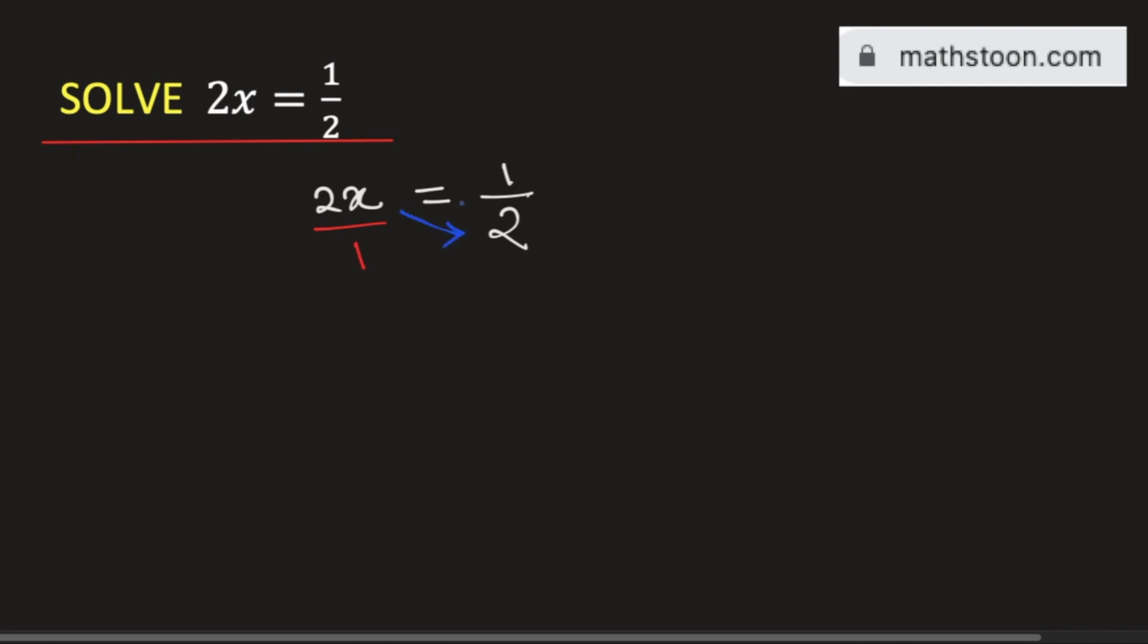Cross multiplying, we get 2x times 2 equals 1 times 1. Multiplying 2x with 2, we have 4x, and on the right hand side we have 1.